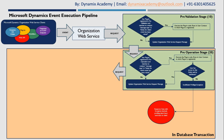If the user has all required access to the entity and attributes, it will update the organization web service and pass the updated request message to the next stage. It is important to understand that the first time a security check is performed is at the pre-operation stage — not at the pre-validation stage. This is because all required access and privilege information is stored in the database, which is why security-related checks are first performed at pre-operation stage.